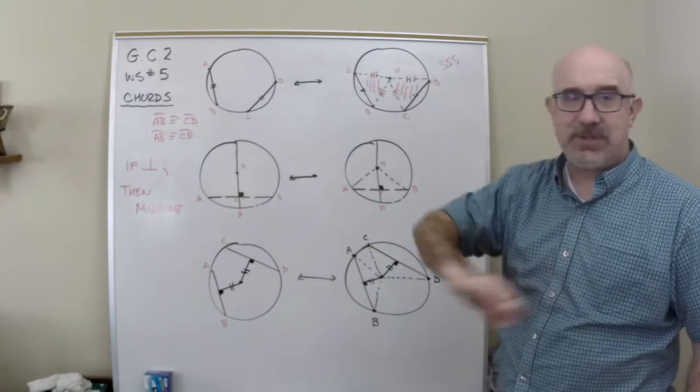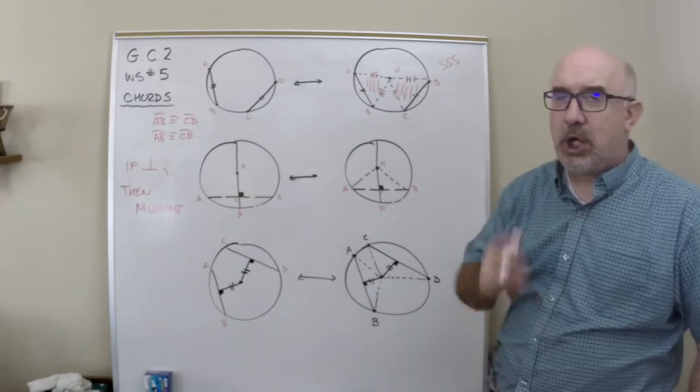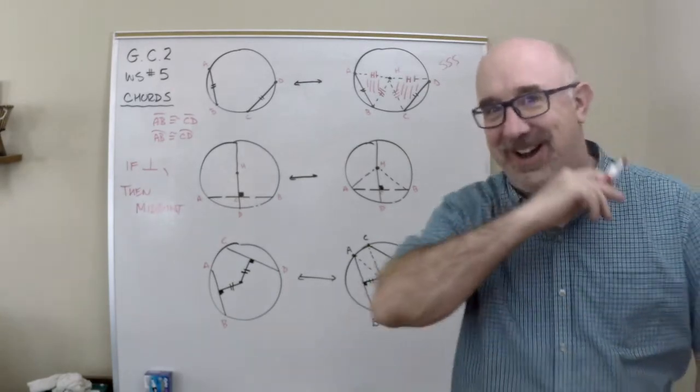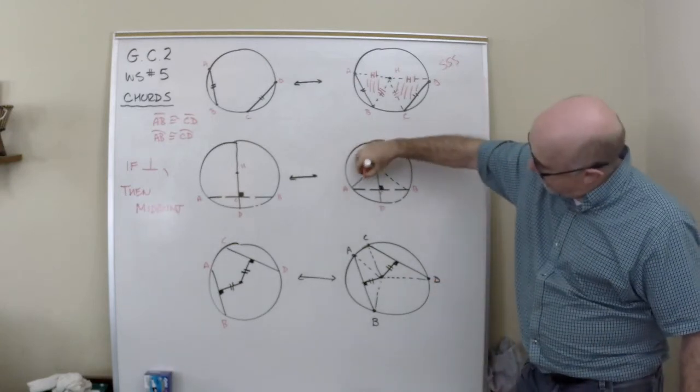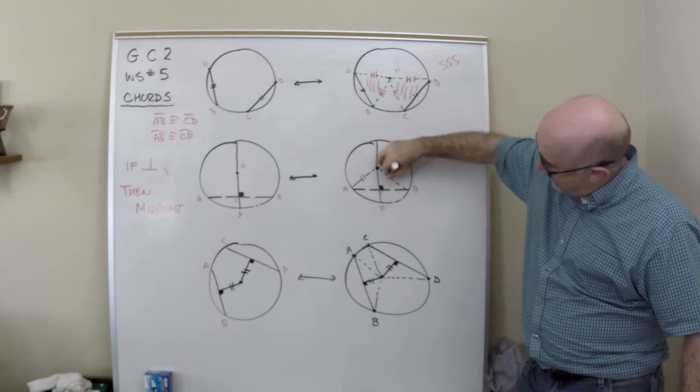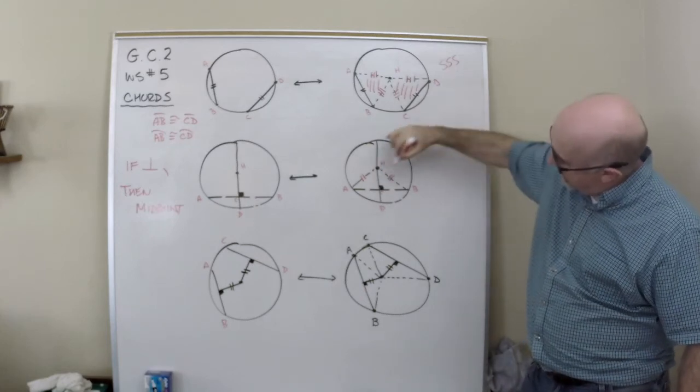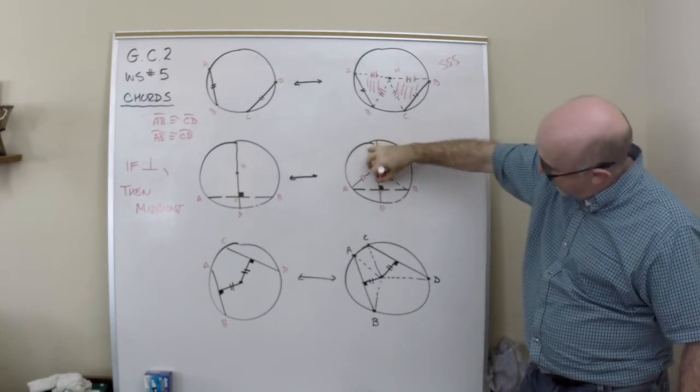Close off those triangles with radii. It's easy. Now when you use this line, it's a radius. When you use this line, it's a radius. This little side is a common side.